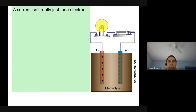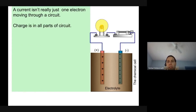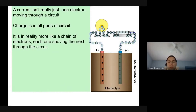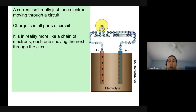Think of charge as being distributed in all parts of the circuit, because electrons and protons exist throughout. When you connect the circuit, it's like holding a hula hoop — the moment someone starts moving it, everyone feels it move. Each electron gives a shove to the next electron through the circuit, causing that flow of charge.